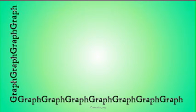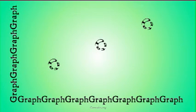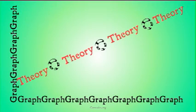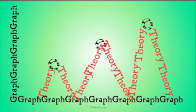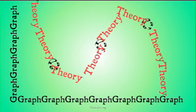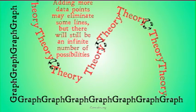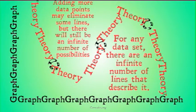To get a sense of this, let's look at a simplification of the idea. Imagine you have three data points on a graph, and you want to come up with a theory to predict where other data points will show up. You could come up with one theory supported by all the data points — however, you could also come up with another, or another. Any number of different theories, functions, or lines can be drawn through those data points; in fact, there's an infinite number. No matter how many data points you add, there will still be an infinite number of possible lines or theories that can be drawn through them.